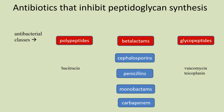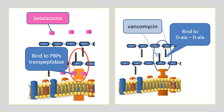Now let's take a closer look at the glycopeptides. They also prevent transpeptidase activity of the penicillin binding proteins, but the difference is in their target. Glycopeptides such as vancomycin or tycoplanin bind to NAM's alanine amino acids instead of the penicillin binding protein's transpeptidase active site — in other words, they bind to the transpeptidase's substrate rather than the enzyme itself. When vancomycin or tycoplanin are attached to the D-alanine–D-alanine, the two amino acids can't bind to the penicillin binding protein's active site, which prevents the cross-linking between the peptidoglycan strands.